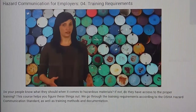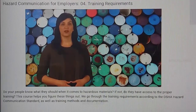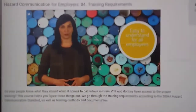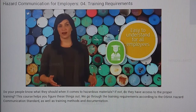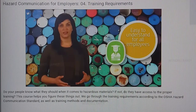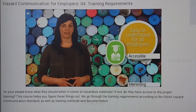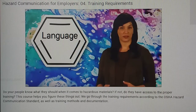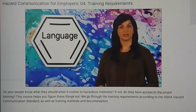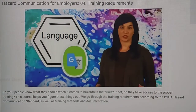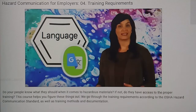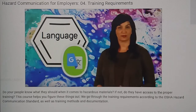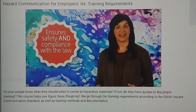Now we know what information you need to cover, let's talk about the training itself. The standard is clear: the training must be easy to understand for all employees. You can't provide complicated materials written in college-level English. It's your job to ensure that the training is accessible and engaging. The standard also addresses language — if you have employees who speak English as a second language, it's your responsibility to translate training for them. Don't assume that just because someone speaks English at work that they can read complex training in English. I recommend offering translated materials all the time, regardless of the situation, to ensure safety and compliance with the law.